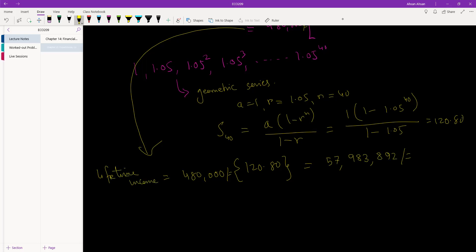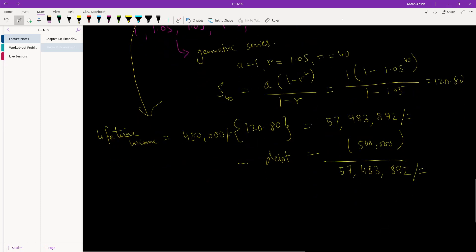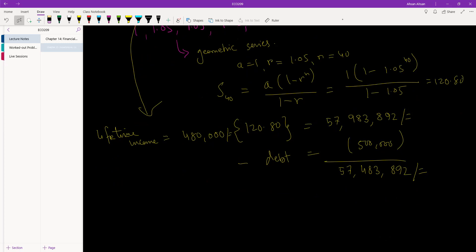You are going to earn this much money in your life, okay? But remember, you also had a debt. So minus debt, so your debt was 500,000. Doesn't look like a whole lot now, does it? So you are going to have 57,483,892.